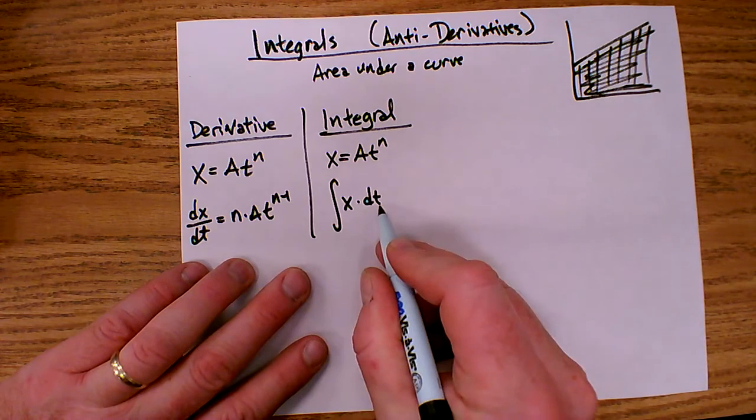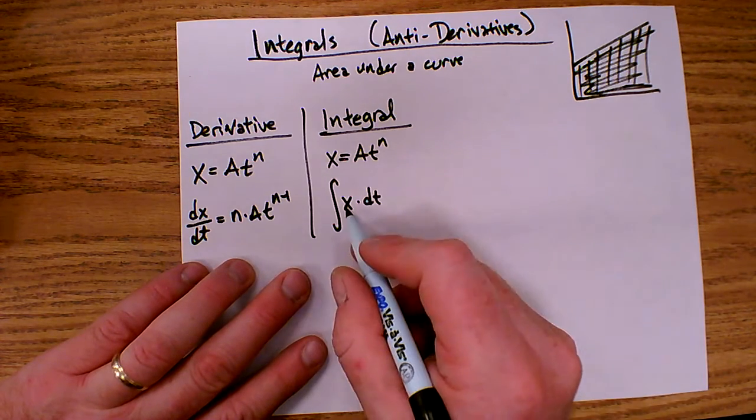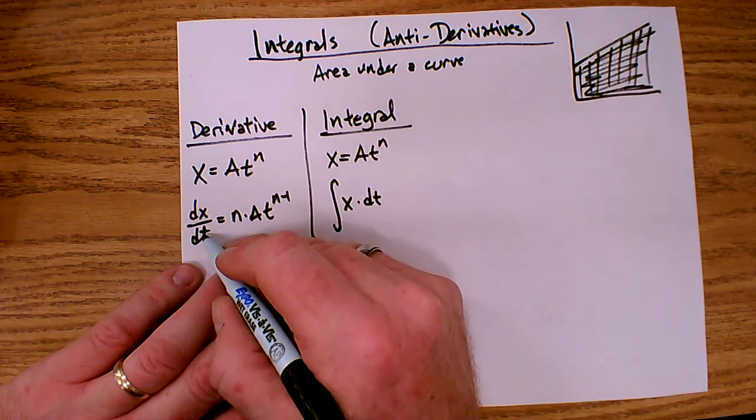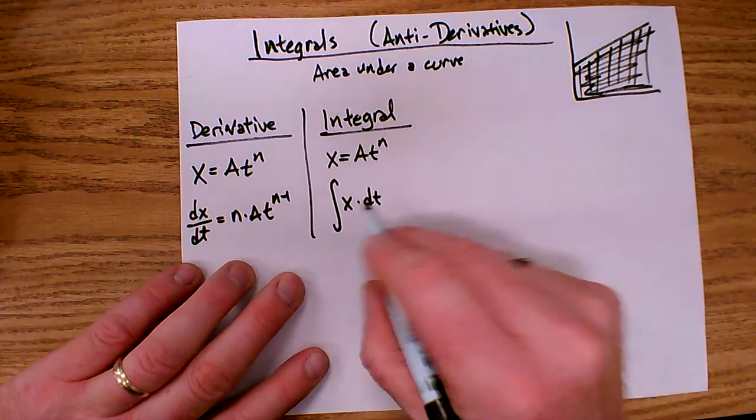Now, what does that mean, the integral of x dt? So I could read it as the integral of x with respect to time, just like this was the derivative of x with respect to time. But let's take a look at where we get this notation from.